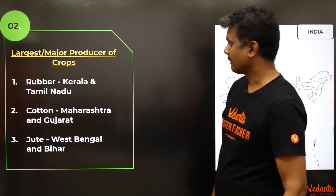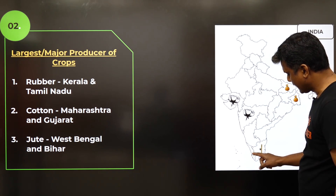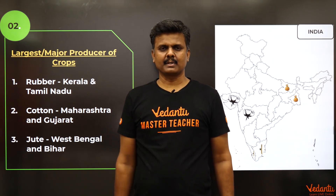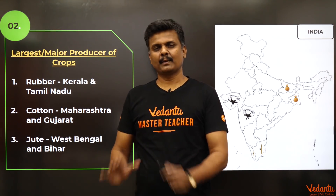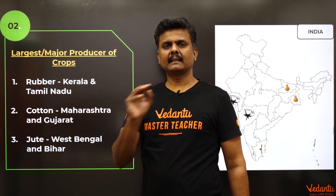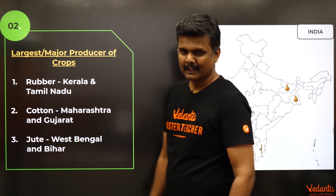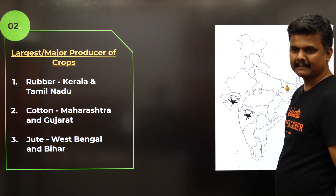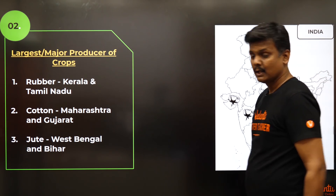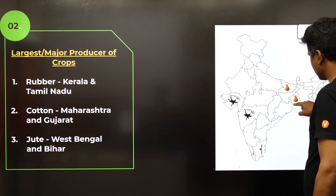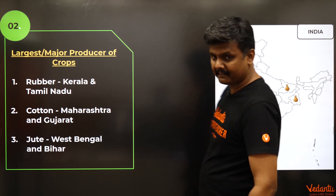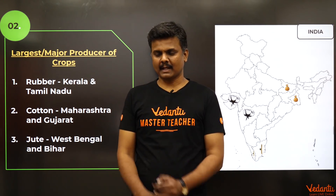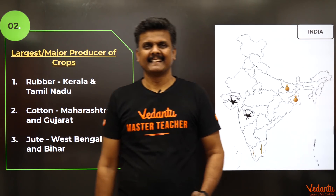Rubber typically grows in Kerala and Tamil Nadu — the lower portion of the southern belt. These are the two most important regions for rubber in India. Cotton is always in Maharashtra and Gujarat — that black soil belt. Jute is grown in West Bengal and Bihar. Remember: rubber is Kerala and Tamil Nadu, cotton is Maharashtra and Gujarat, jute is West Bengal and Bihar.